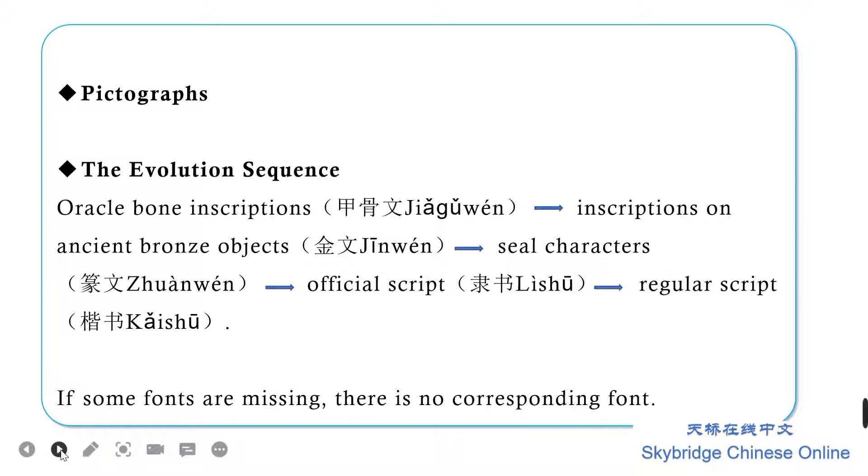Second, each character is written in order of oracle bone inscriptions (jiǎgǔwén), inscriptions on ancient bronze objects (jīnwén), seal script (zhuànwén), clerical script (lìshū), and regular script (kǎishū). If some fonts are missing, there is no corresponding font.